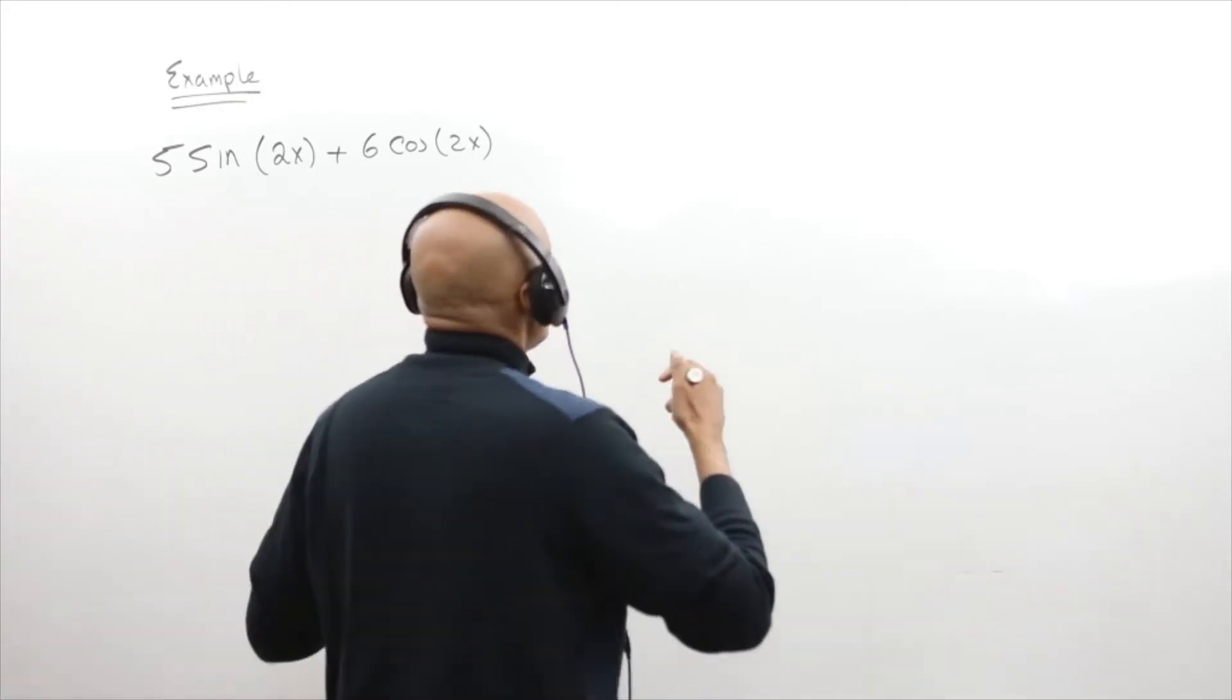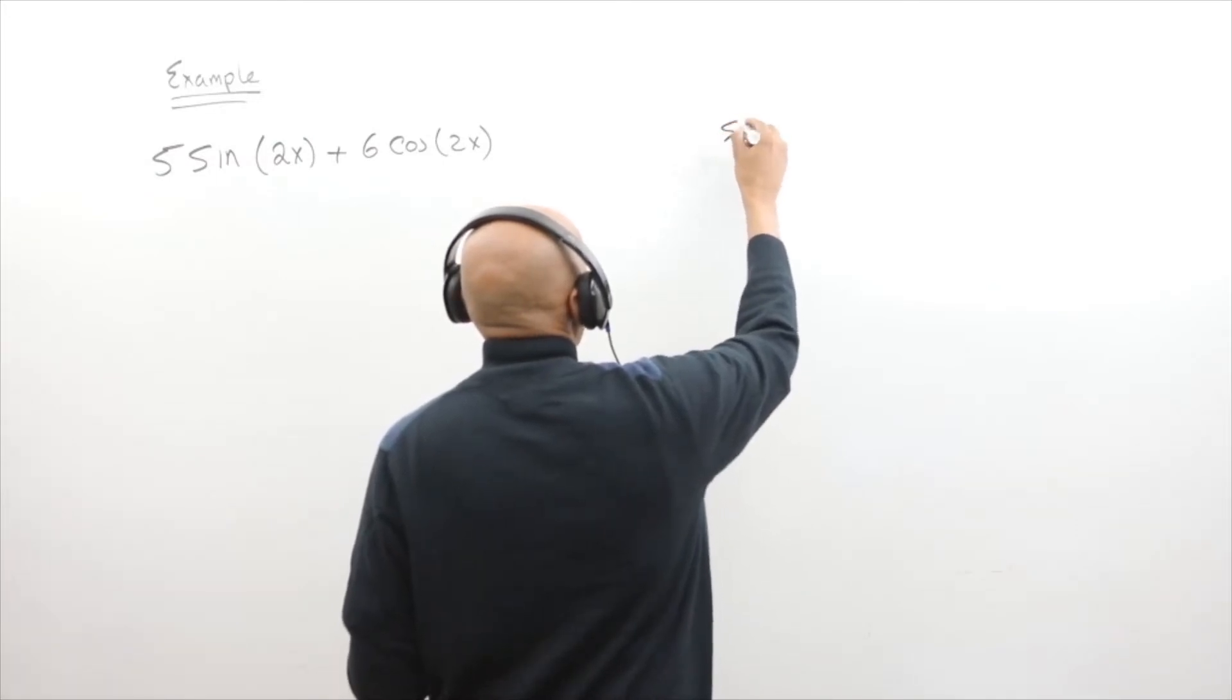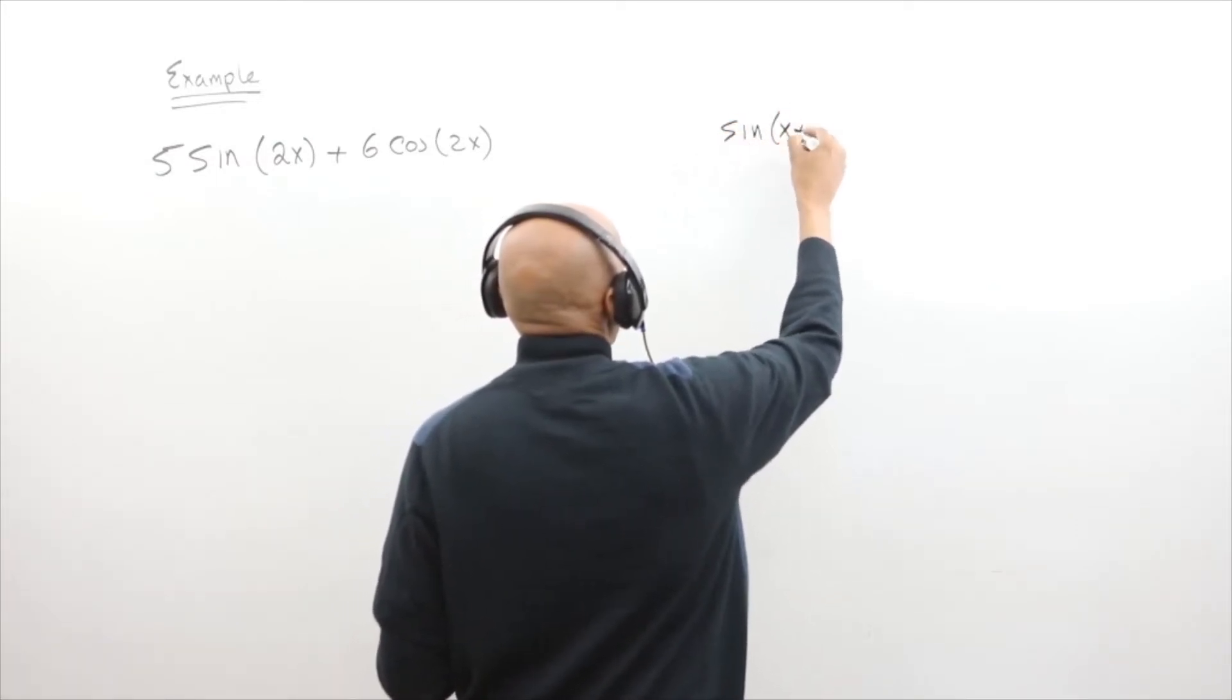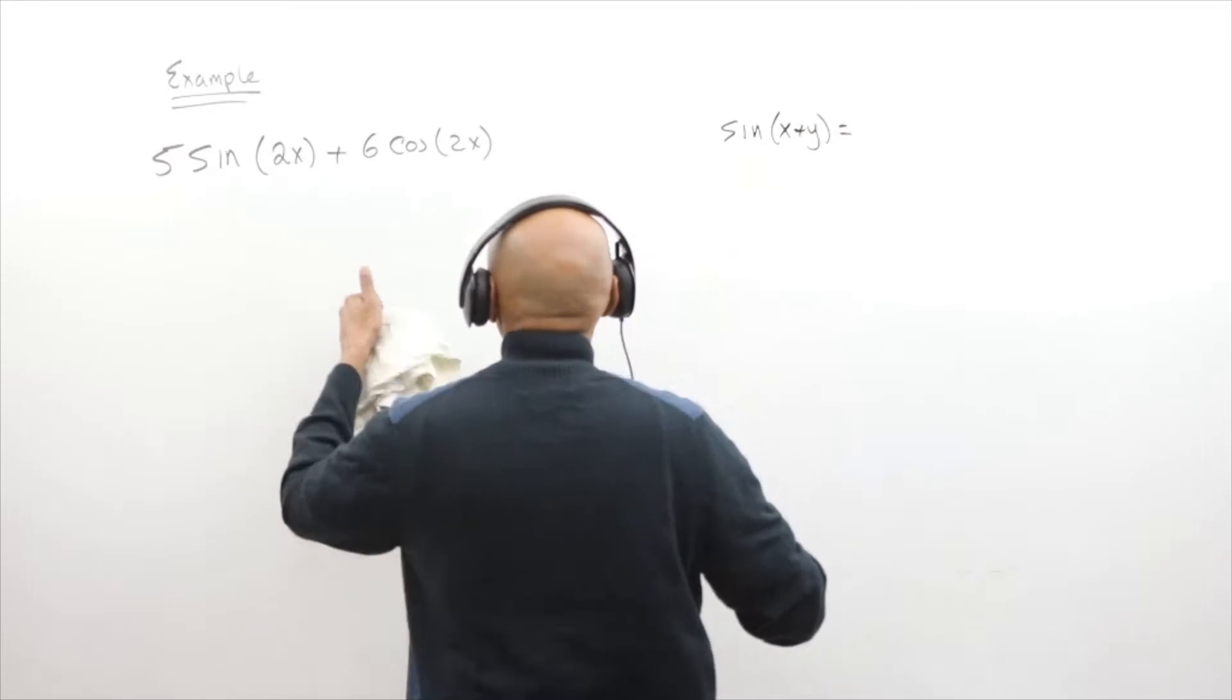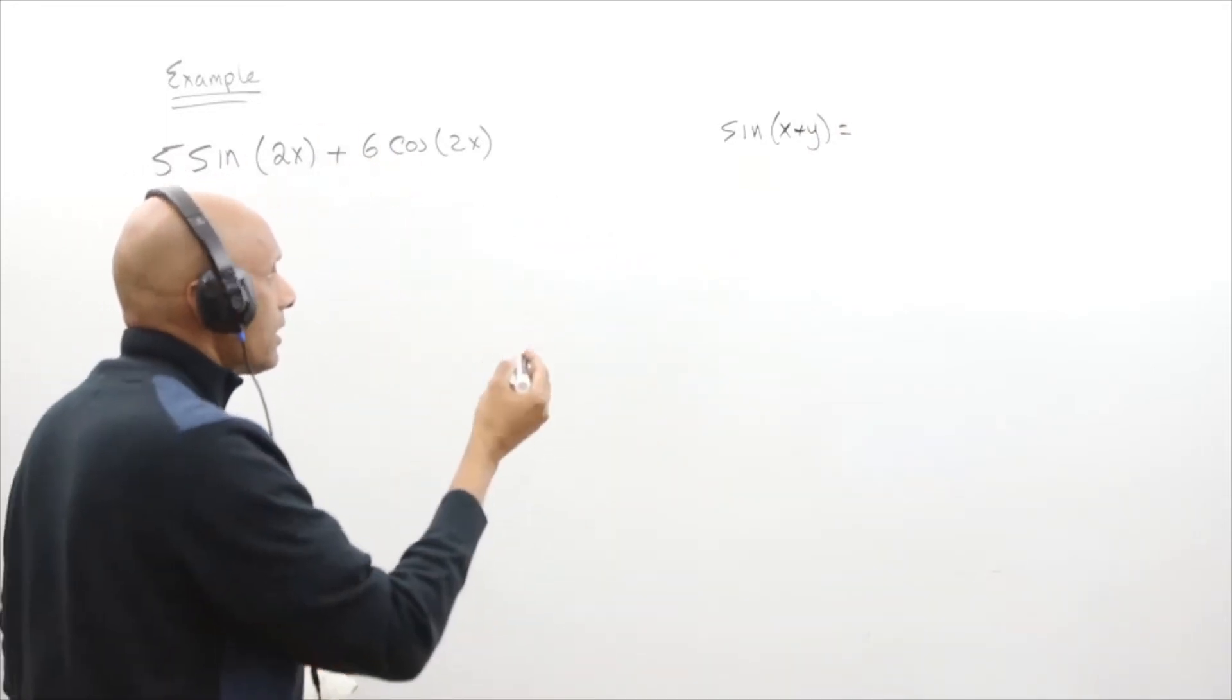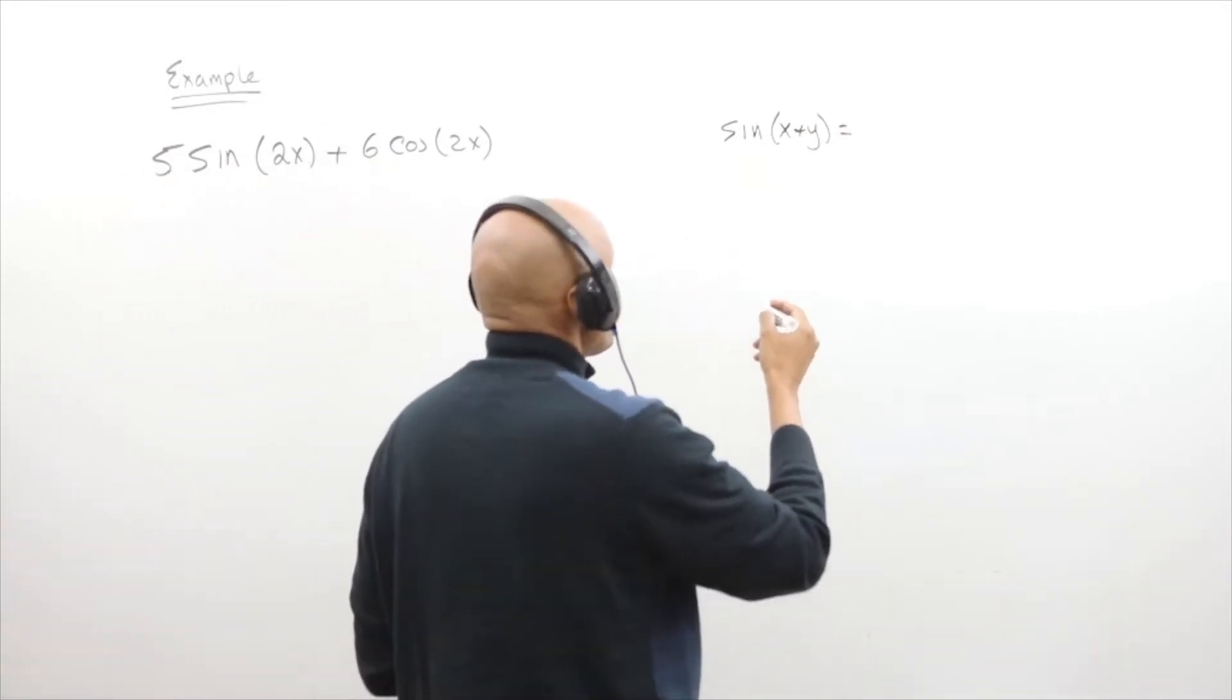To remind you what the double angle formulas are, I'm going to write over here. So this is sine of x plus y, and that's what I'm going to do. I first convert this into a sine function and then I'll do cosine. So I'll do the sine first.